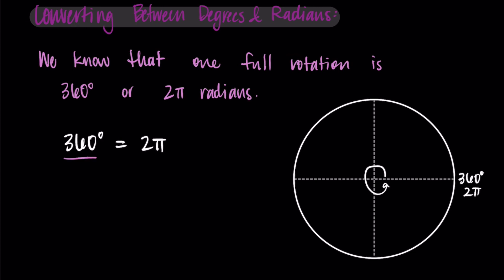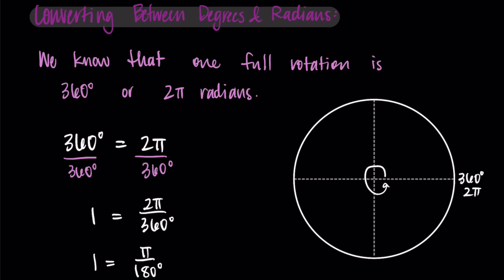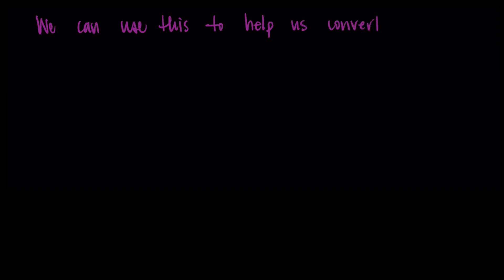So what I'm going to do is divide by 360, and I'm getting that 1 is equal to 2π over 360 degrees. Simplifying this, that means that 1 is equal to π over 180 degrees. This is powerful because we can multiply by 1 and get the same result. We're not changing the number, we're just changing what it looks like.